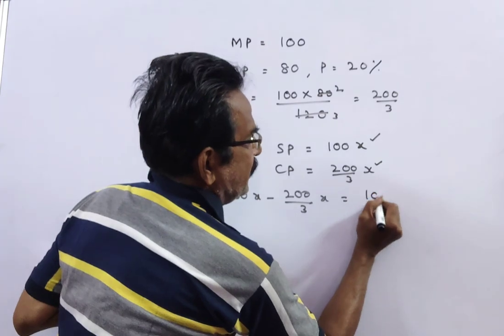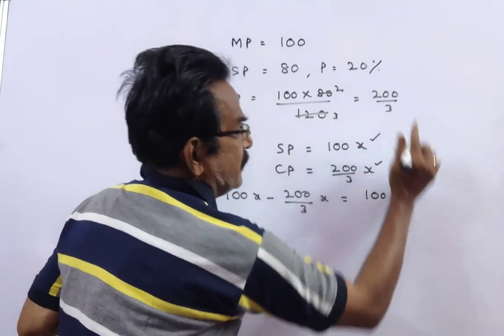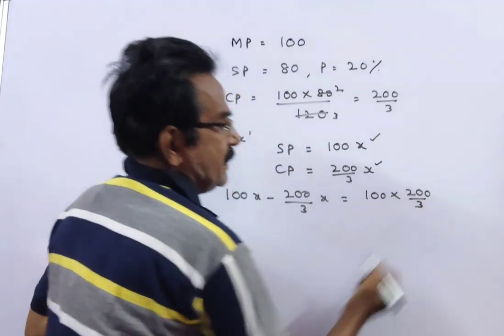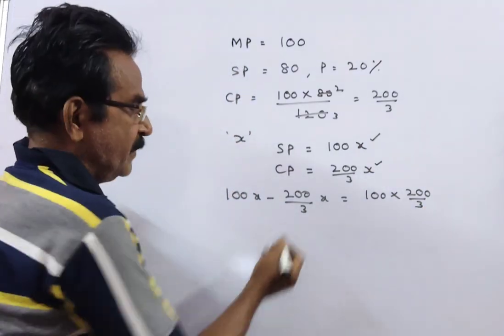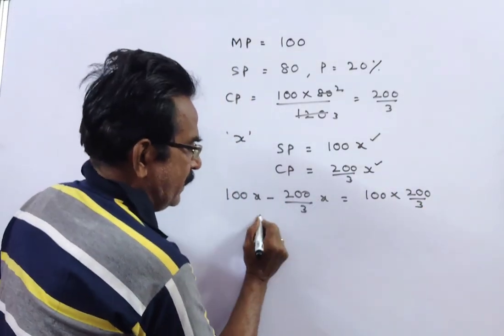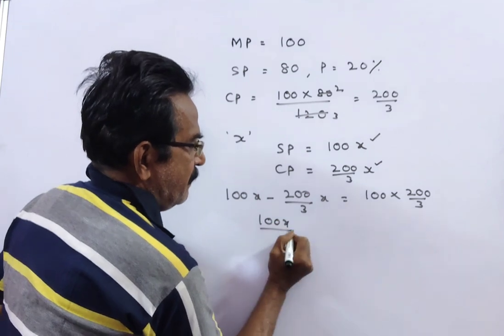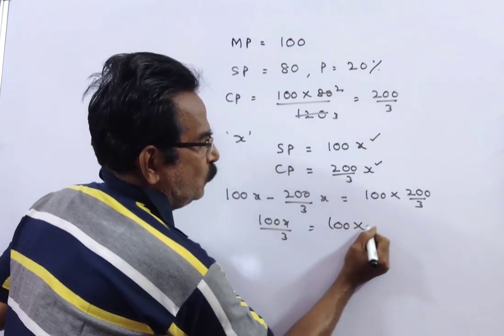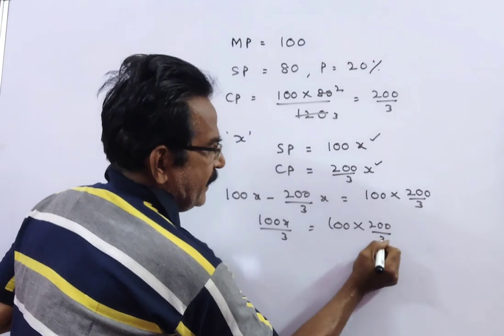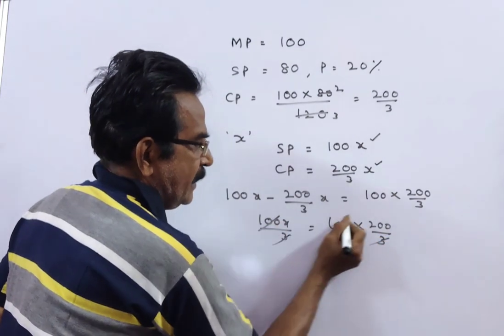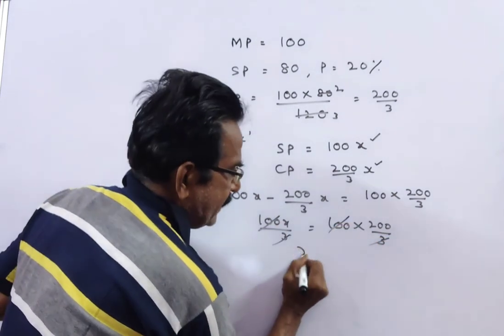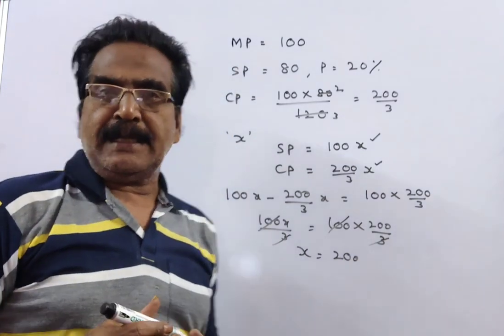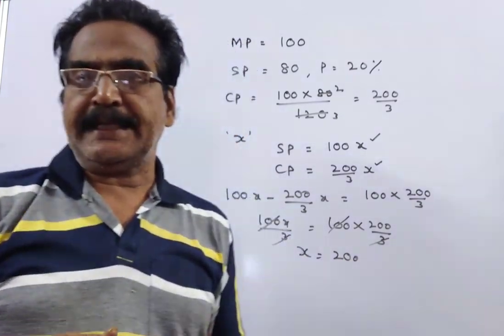It is given that the profit earned equals the cost price of 100 articles. The cost price of 100 articles is 100 × 200/3. So 100X/3 = 100 × 200/3. The 3 cancels, then 100 cancels, giving X = 200. So on that particular day he sold 200 articles.